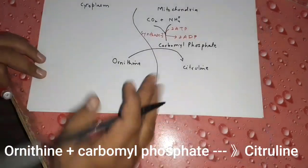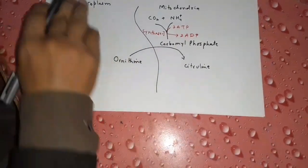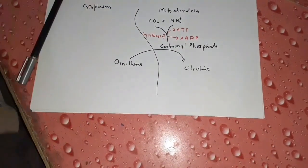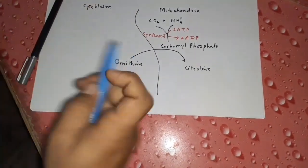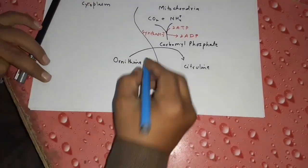The enzyme carbamoyl phosphate synthase 1 (CPS1) is used in this step. Carbamoyl phosphate then combines with ornithine and is converted into citrulline. This reaction is catalyzed by the enzyme ornithine transcarbamylase.